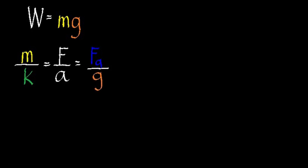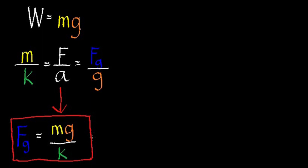Do you remember this formula? W equals mg. This formula tells us that weight equals the product of mass and acceleration due to gravity. But instead of using W equals mg, in thermodynamics we will use the following general formula: m over k equals F over a equals Fg over g. This is the formula we will use instead of W equals mg.